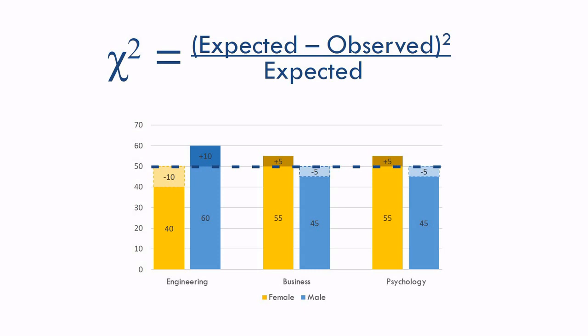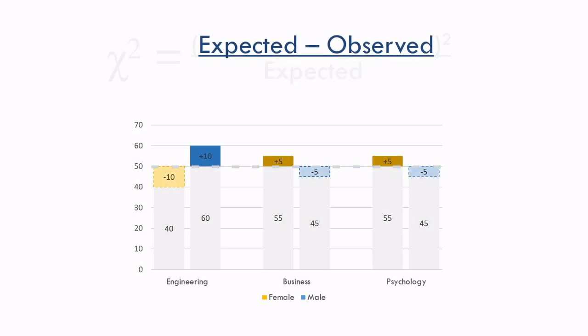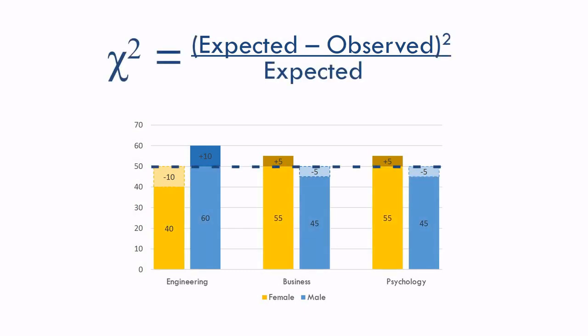Our expected value is the dashed line — it's what we would expect if there were no relationship and the counts were evenly spread. In this case, it's 50 for all combinations of gender and major. These little highlighted sections are the differences between what we'd expected and what we observed. In this case, they're all tens or fives. This is the top half of our equation. When you put it all together, you get your chi-square value. We represent this with the Greek letter chi, which looks like a fancy letter x.